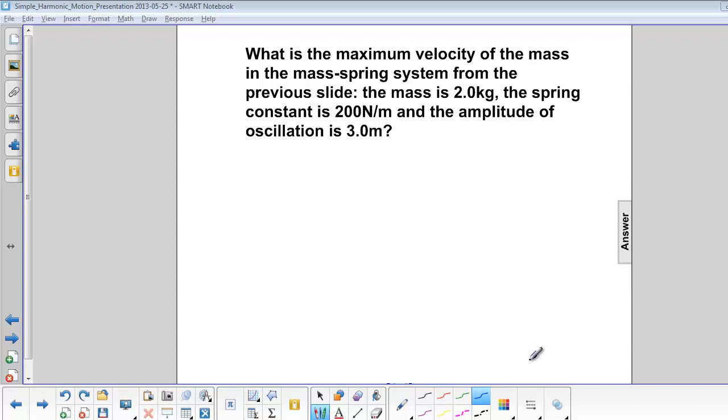What is the maximum velocity of the mass-spring system from the previous slide? In the previous problem, we found that the total energy was all elastic potential energy, which was 900 joules.